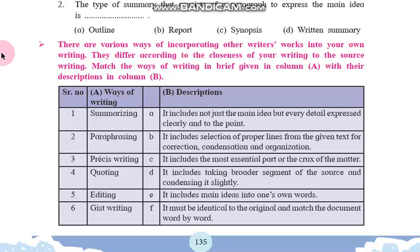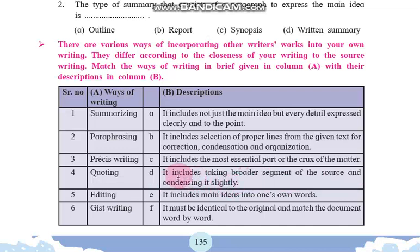We have to match the pairs from Column A and B. First: Summarizing. Summarizing means to make it short. It includes taking a broader segment of the source and condensing it slightly — 'broad segment condense karane,' 'sankshipta karane.' Summarizing matches with option D.